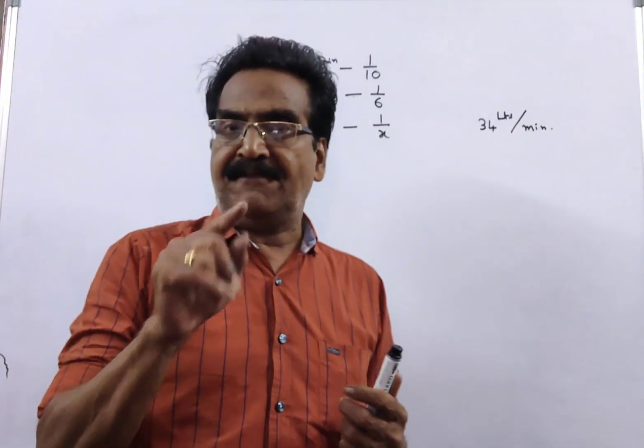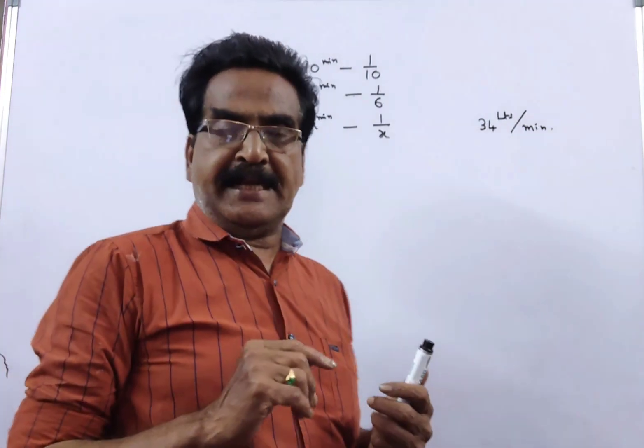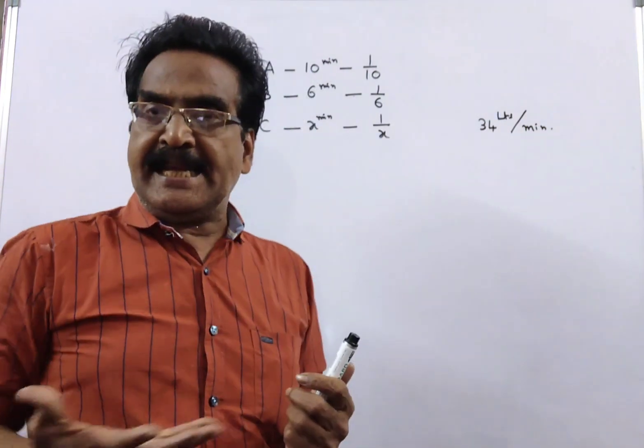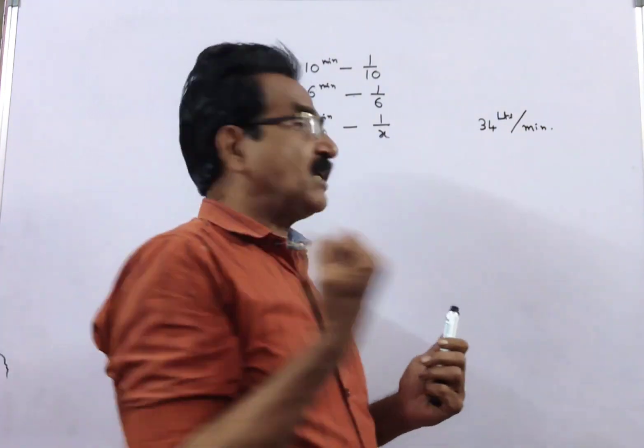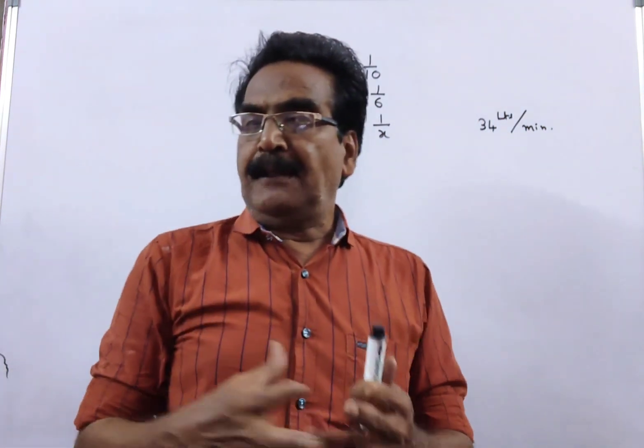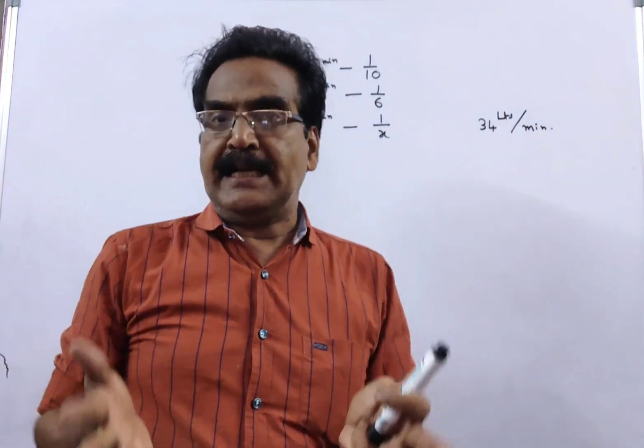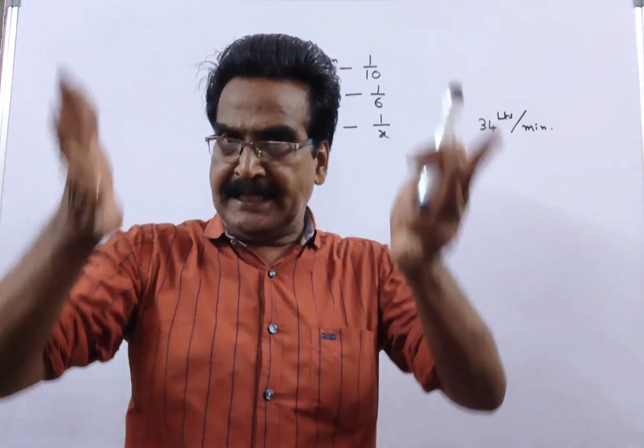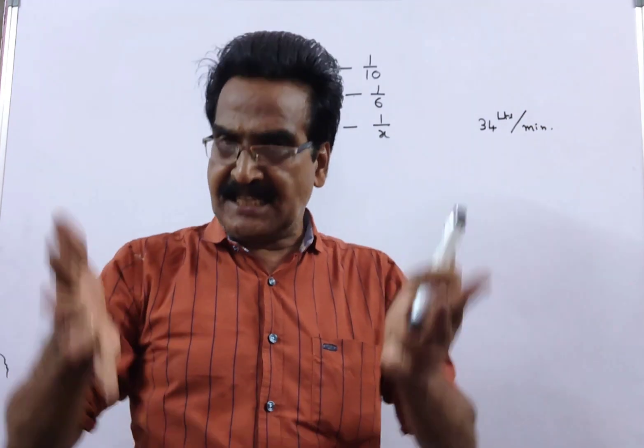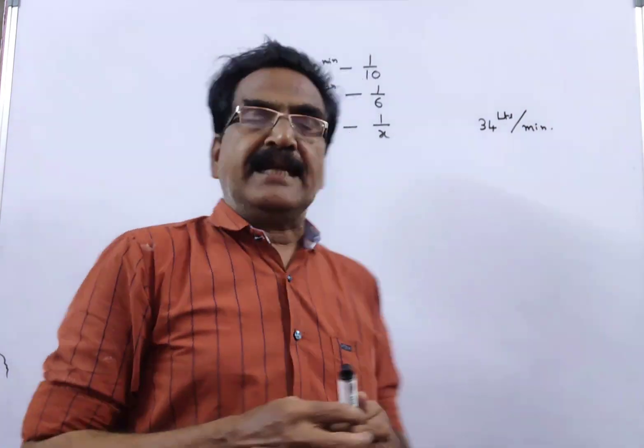Pipes A and B can fill a storage tank in 10 minutes and 6 minutes respectively, while pipe C draws out 34 liters per minute. If all the 3 pipes are opened simultaneously, a full tank is emptied in 1 hour, that is in 60 minutes. Here the question is, what is the capacity of the tank?